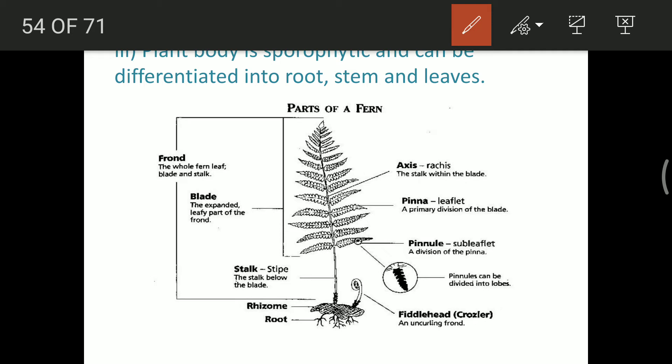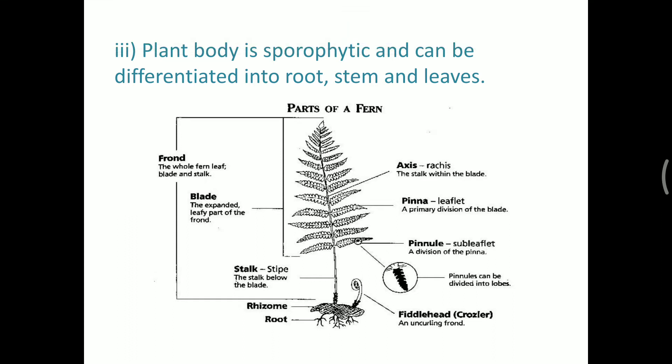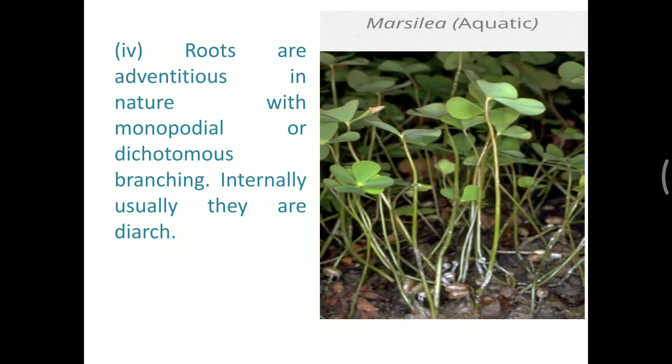The fiddlehead is a very common form of a growing fern — a coiled structure that is simply a young fern. The roots of Marsilia, an aquatic fern, are shown as an example. They grow in places with a huge amount of water or in close proximity to water. That is why very well-developed vascular system is not present in them, and that is also why they are called amphibians of the plant kingdom.